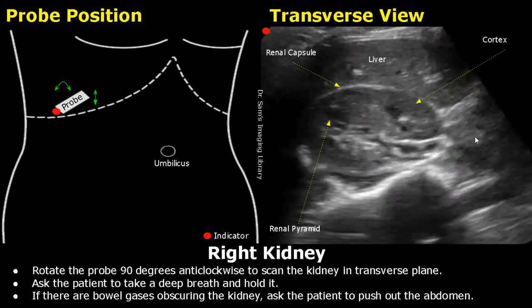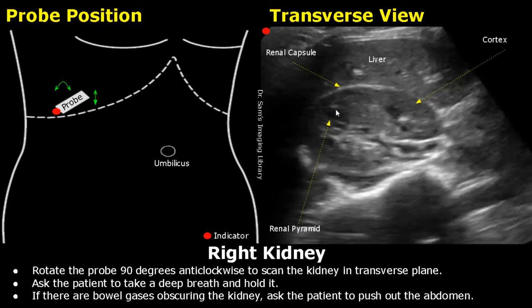To scan the right kidney in transverse view, rotate the probe 90 degrees anticlockwise in the same location, as shown in this diagram. The probe is still slightly in oblique orientation. Then ask the patient to take a deep breath and hold it. This will be the image formed — the kidney is seen in transverse view. Here is the renal capsule, the hyperechoic border. This is the cortex, and these are the renal pyramids.